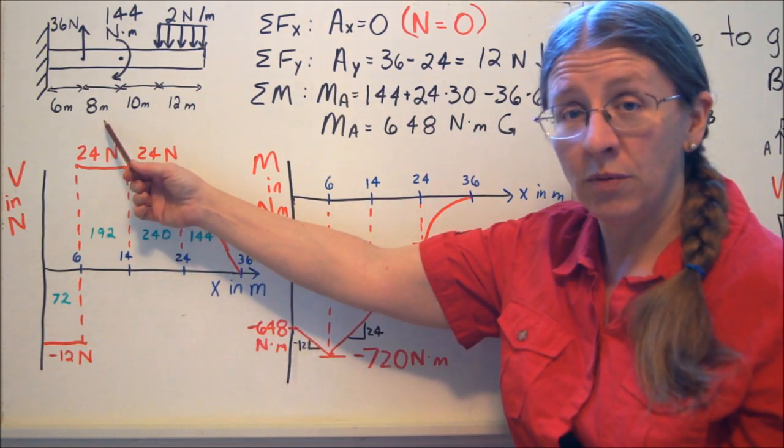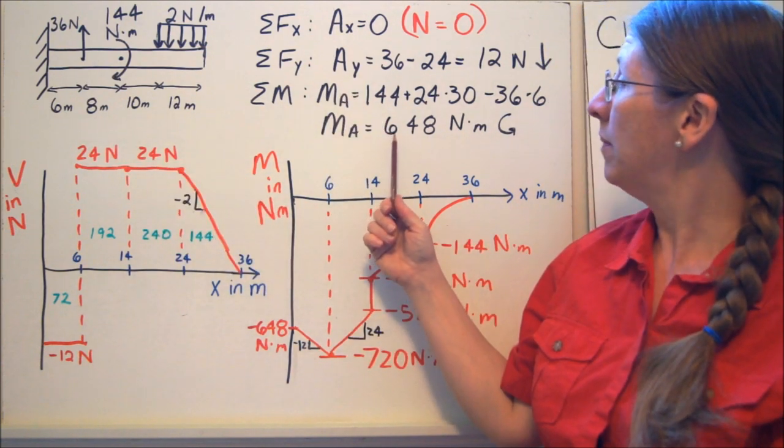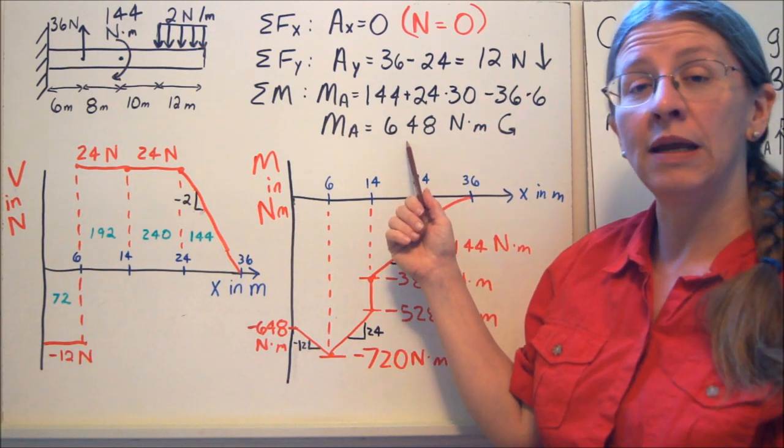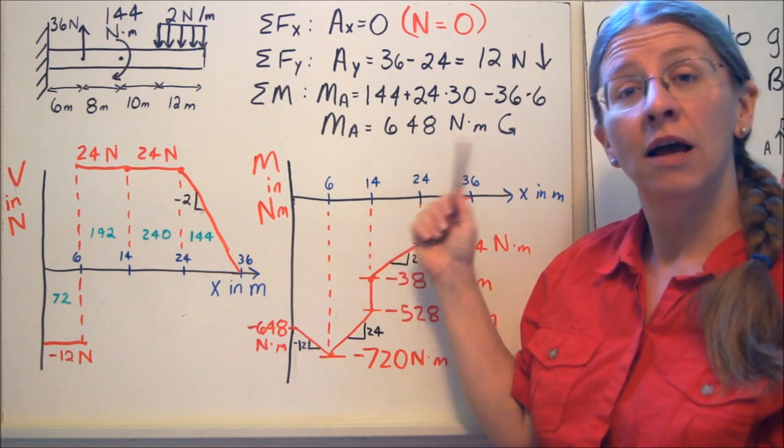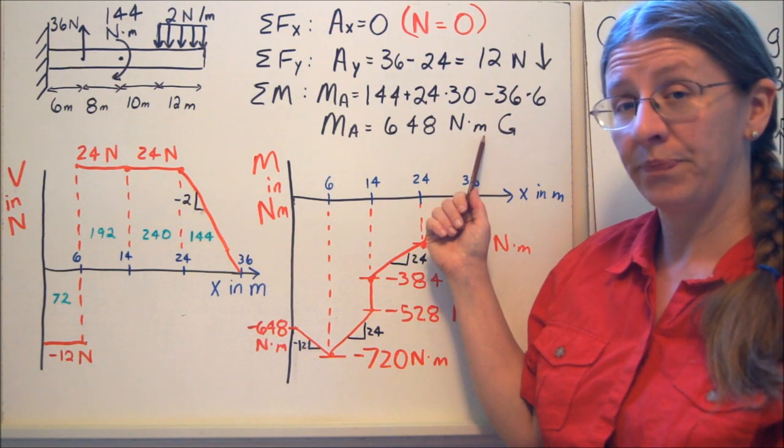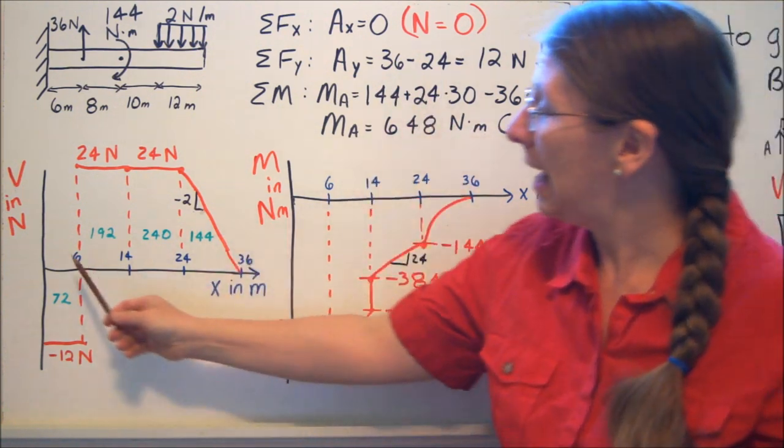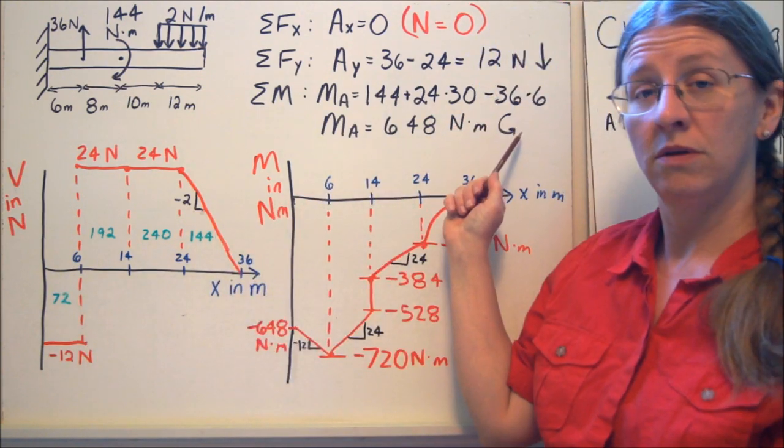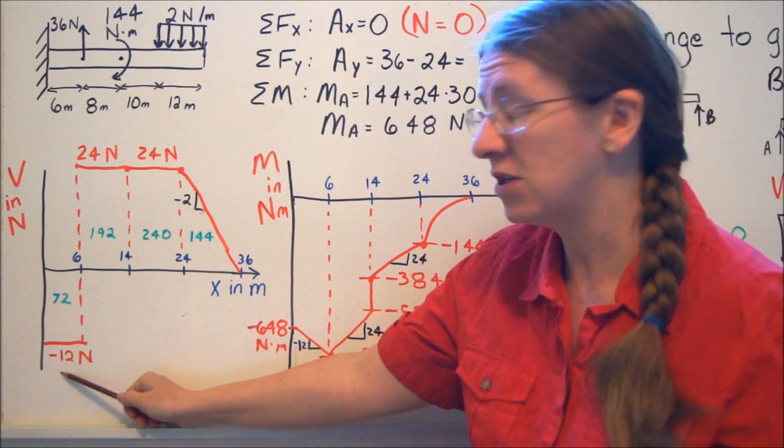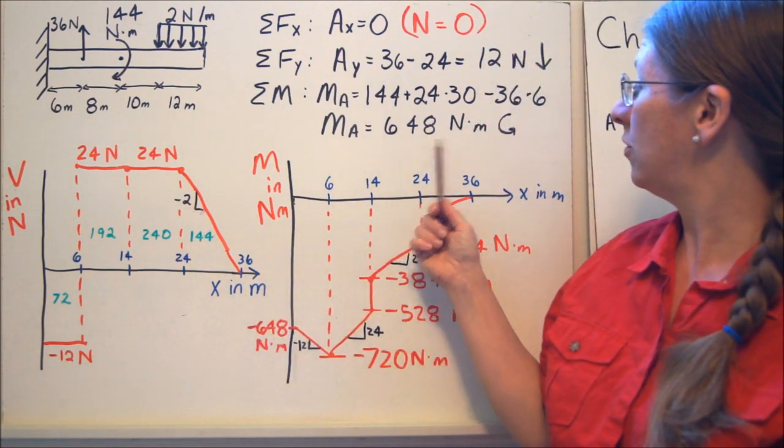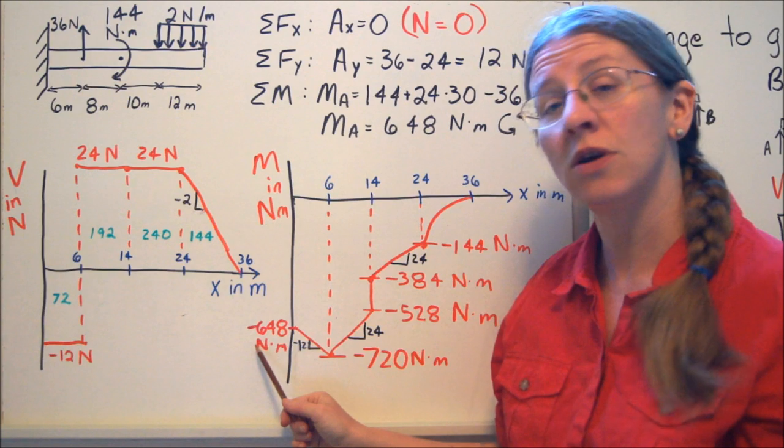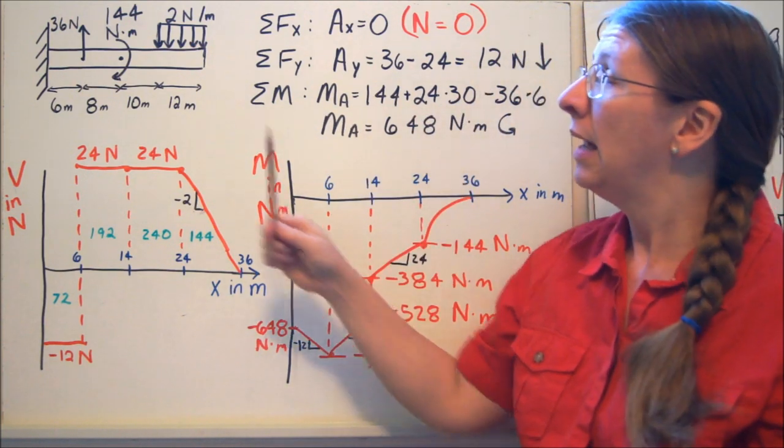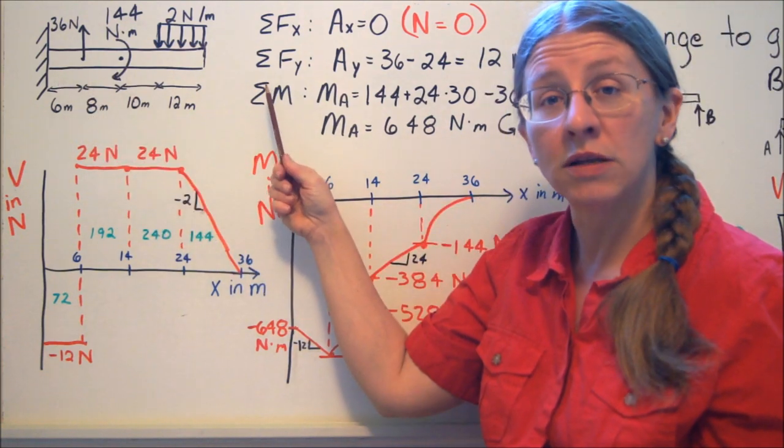Here is a beam that we can look at. I did my equations of equilibrium. So I get AY is 12 newtons down, MA is 648 newton meters. And this is counterclockwise. So at X equals zero, I'm going to start at these loads. 12 newtons down, V starts at negative 12 newtons. 648 newton meters counterclockwise, M starts at negative 648. If these had been in the other direction, then they start positive.